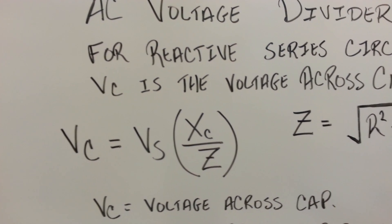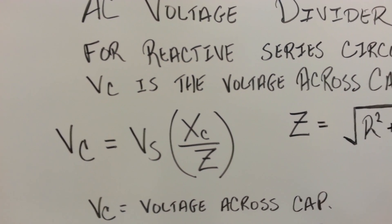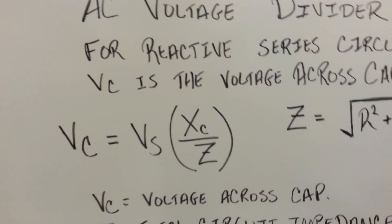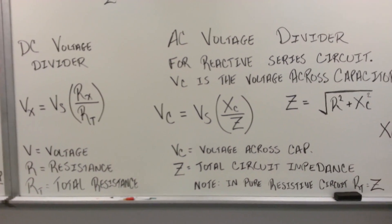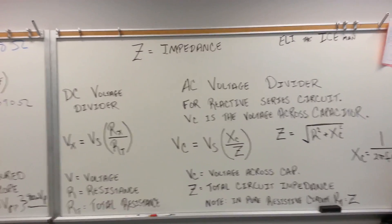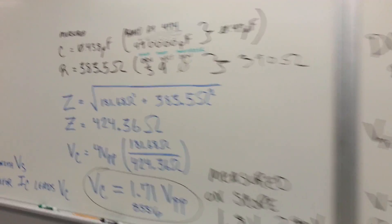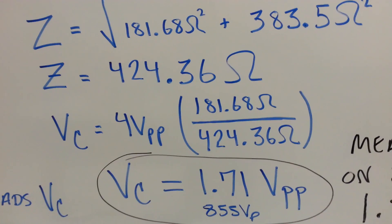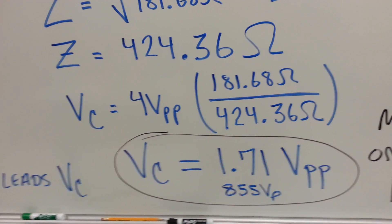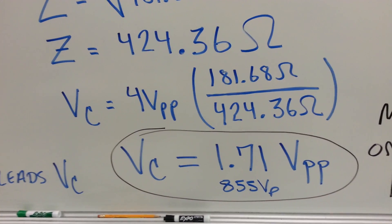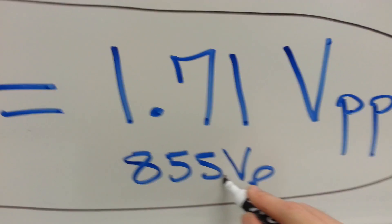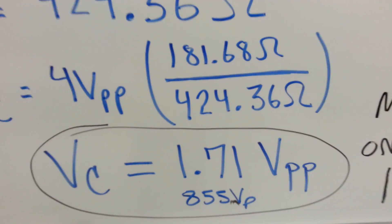And as frequency increases, X of C decreases. So as frequency increases, the voltage across the cap goes down. I found that at 4 volts peak to peak, I'm expecting 1.71 volts peak to peak or 855 millivolts peak. That should be 1.70 volts peak.